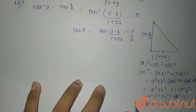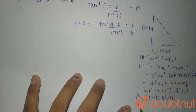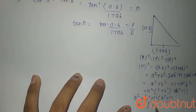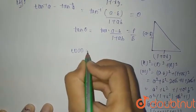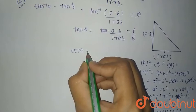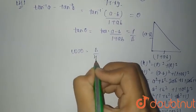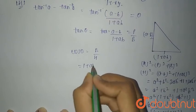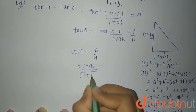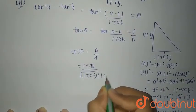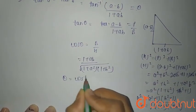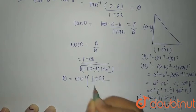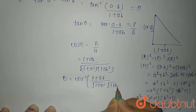So hypotenuse squared equals (1 plus a squared)(1 plus b squared), meaning h equals root of (1 plus a squared) into (1 plus b squared). Now cos theta equals base upon hypotenuse, so cos theta equals (1 plus ab) divided by root of (1 plus a squared) into (1 plus b squared).